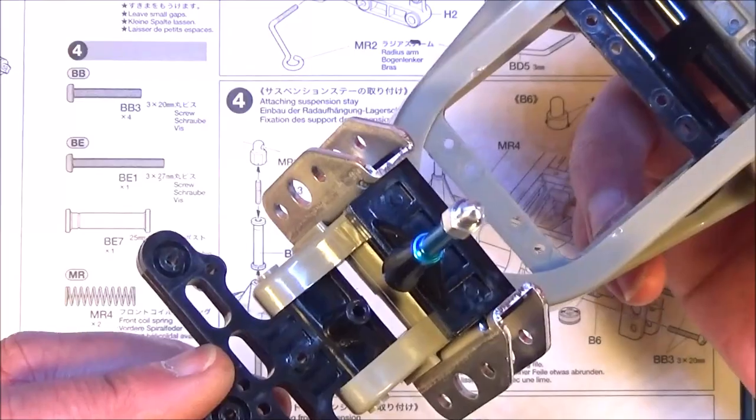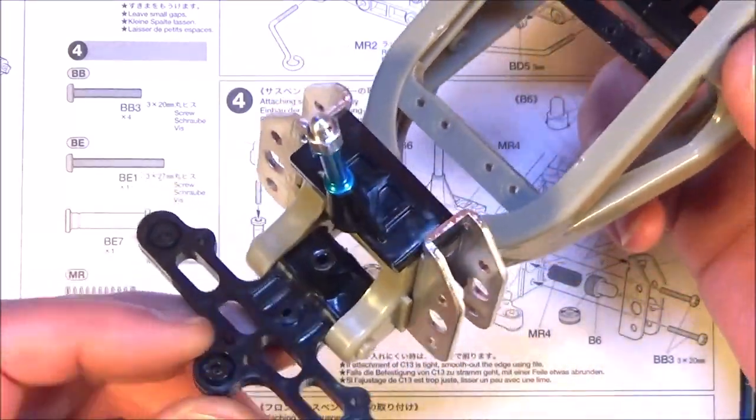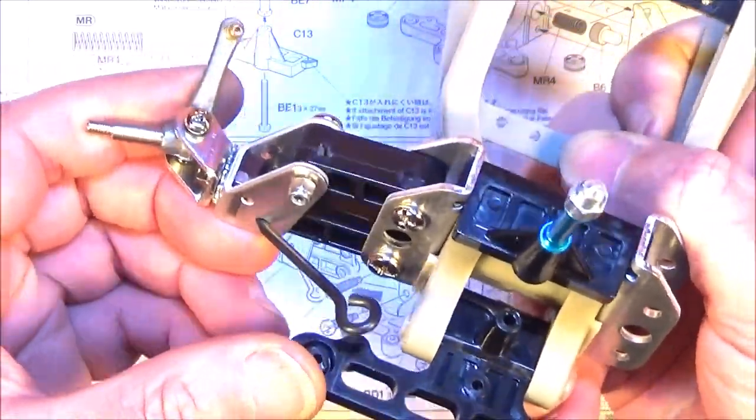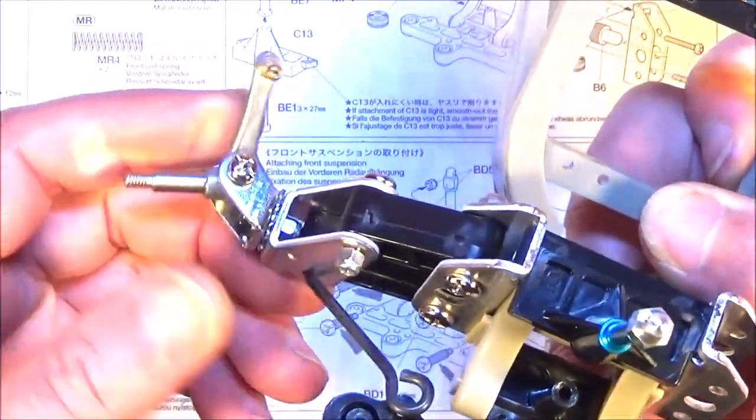And on step 5 where we're going to attach the front suspension arms. Okay so as you can see I've already fitted the one side which is the right side and that seems to be working okay.